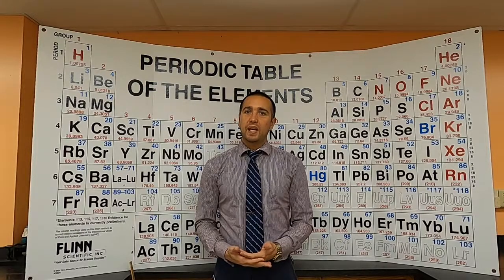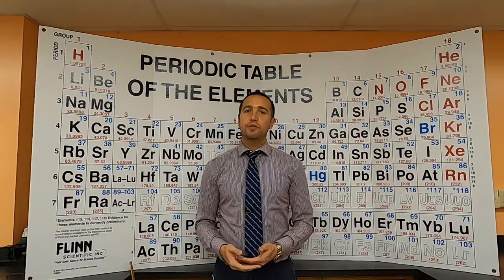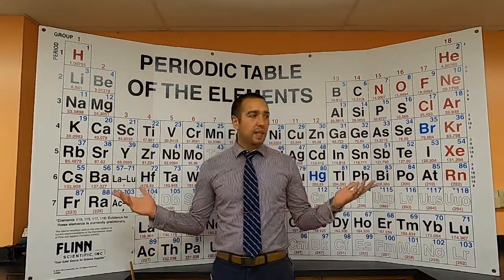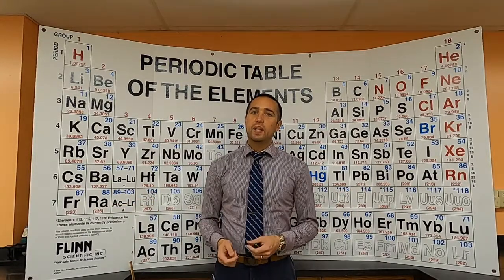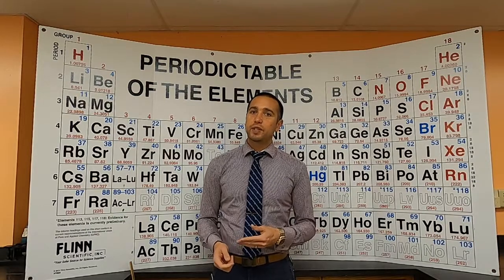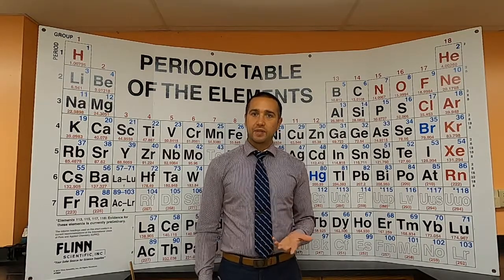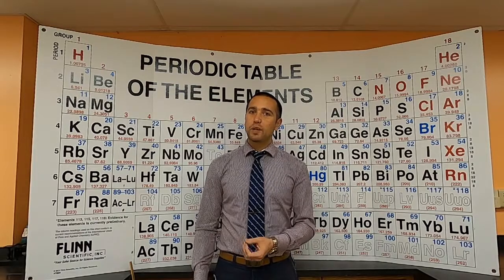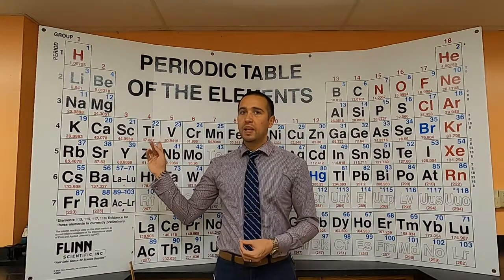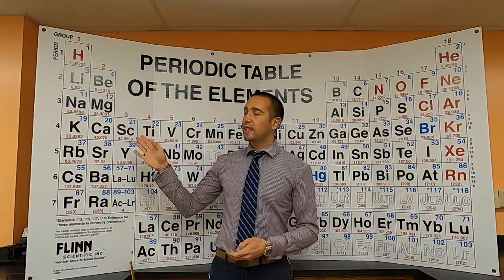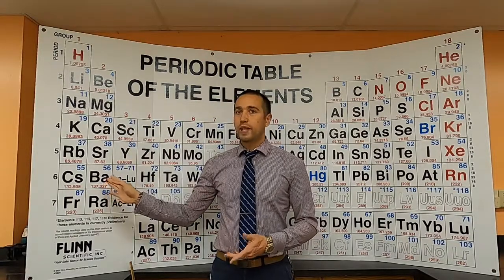Hello everyone. Today I'm going to be showing you what patterns exist in different properties of elements on the periodic table. Remember that the periodic table was set up so that elements near each other, especially within the same column, have similar reactivities. There are also other patterns across rows and periods, and going down a column or group.